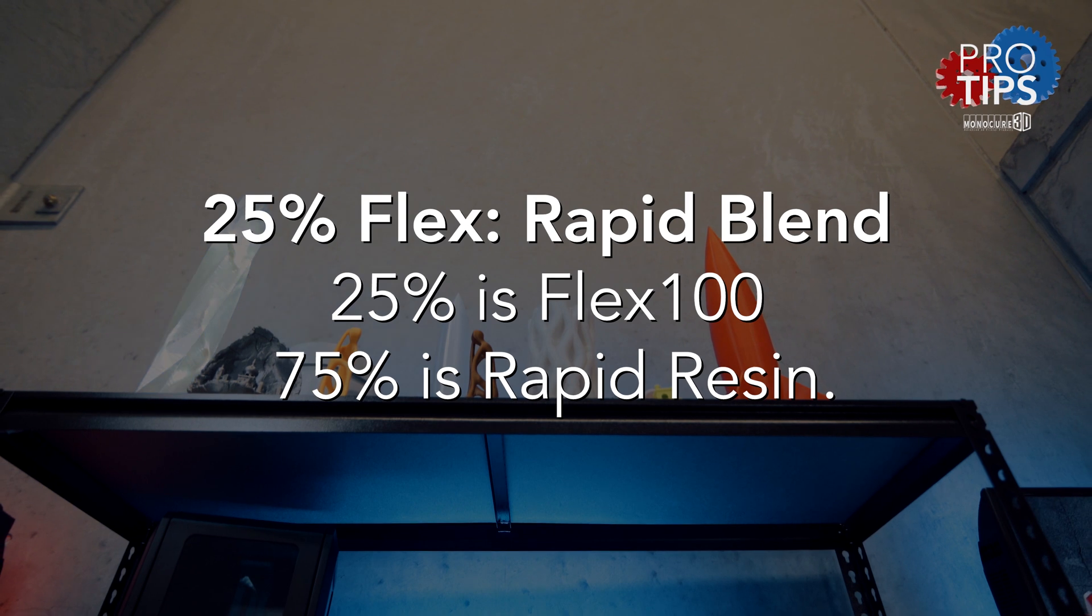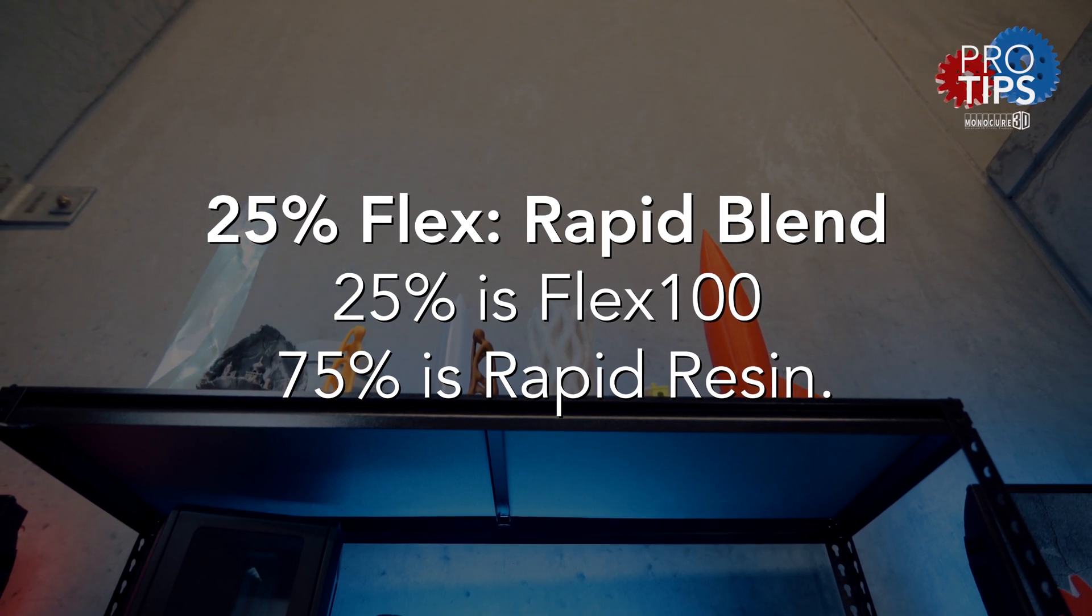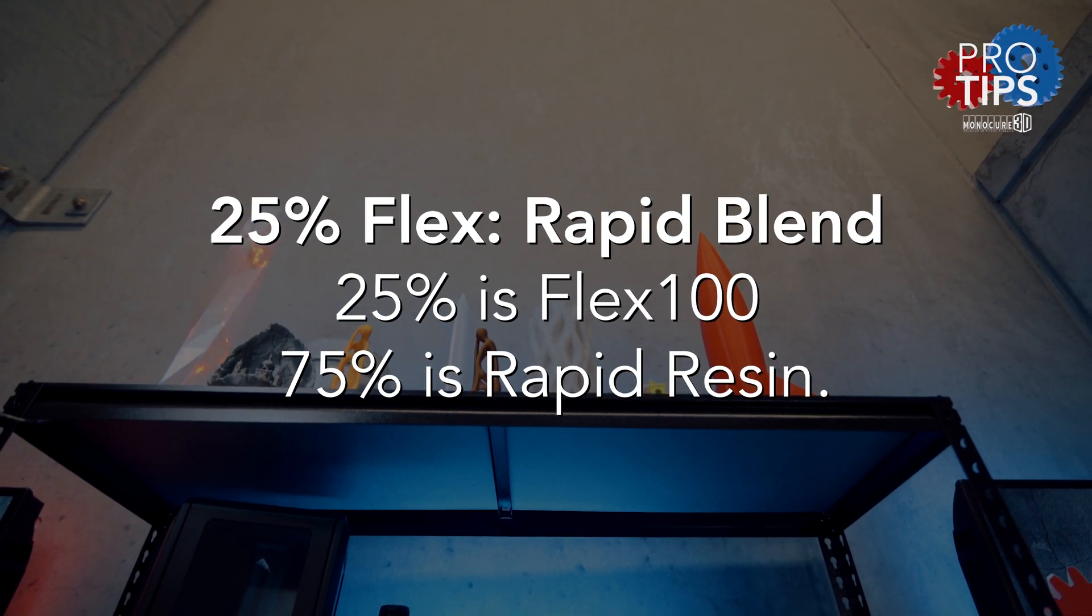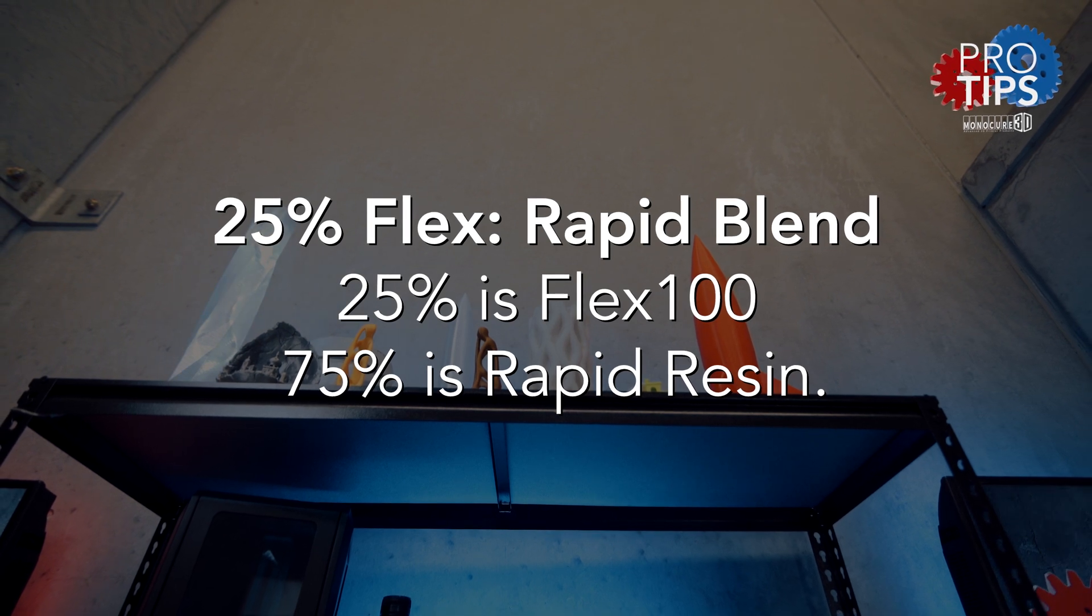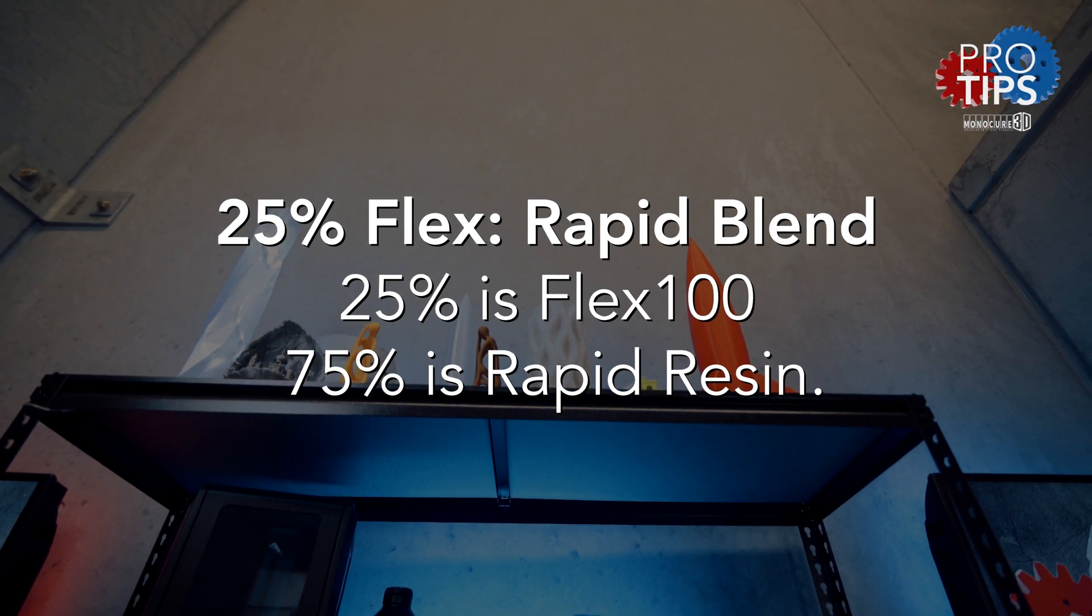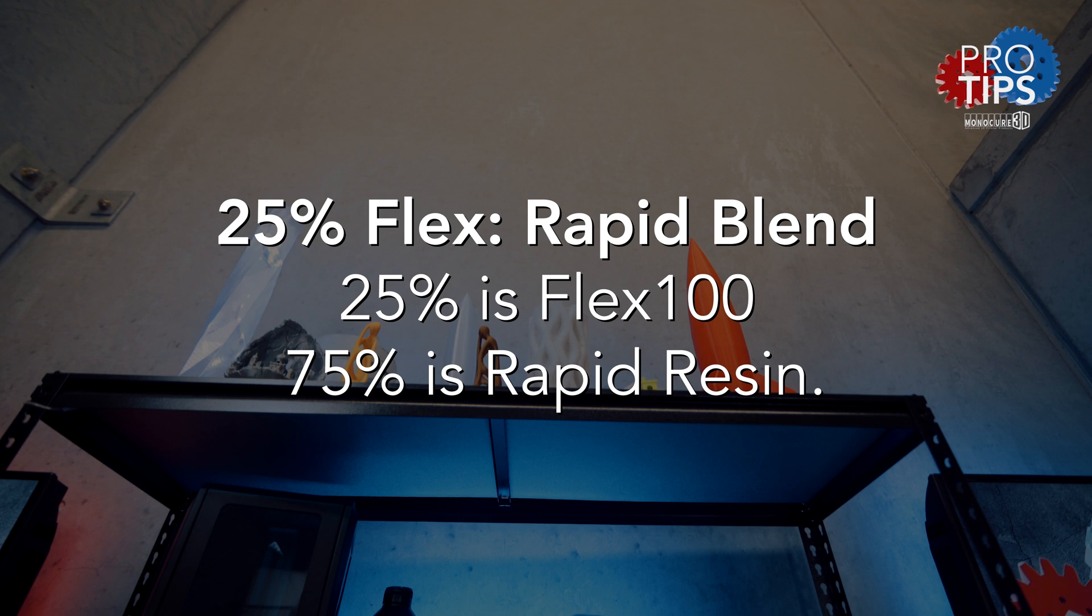The best way to do this is work with percentages when adding the flexible resin. So let's say you want to make a 25% flex rapid blend, for example, where 25% is Flex 100 and 75% is the hard rapid resin.